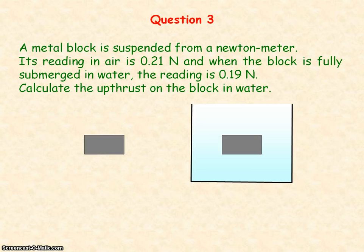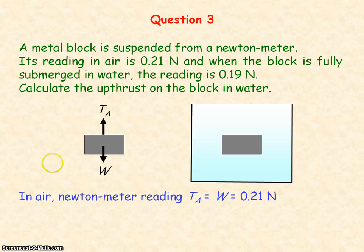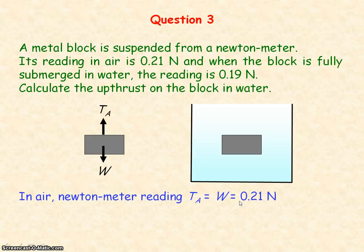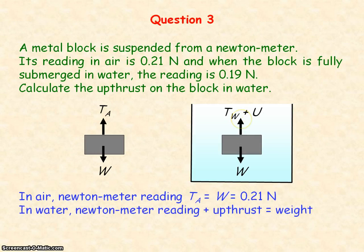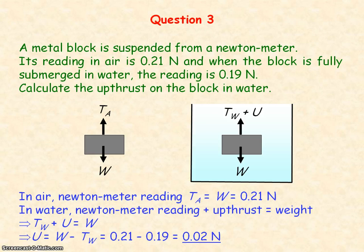Question 3. For the metal block suspended in air, the newton metre reading will equal the weight of the block. We assume that the upthrust of the metal block in air is negligible, so the weight of the metal block is 0.21 newtons. When the metal block is fully submerged in water, the newton metre reading plus the upthrust will equal the weight of the metal block. So the upthrust on the metal block is equal to its weight minus the newton metre reading in water, giving an upthrust of 0.02 newtons.